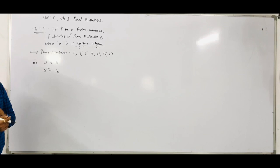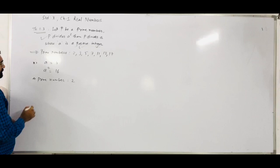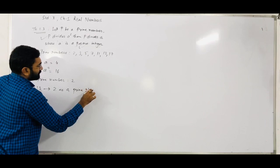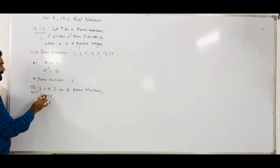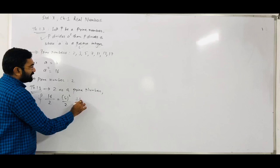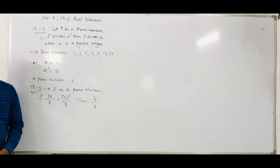Suppose I take the prime number as 2. Then as per Theorem 1.3, 2 is a prime number and 2 divides A squared — it means 2 divides 16, which is 4 squared. That is possible. Then you can say that A is also divided by that prime number — 4 is also divided by 2. So this is our Theorem 1.3: P divides A squared, then P divides A.